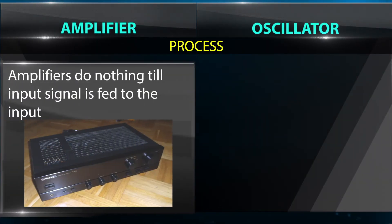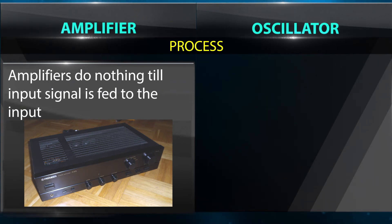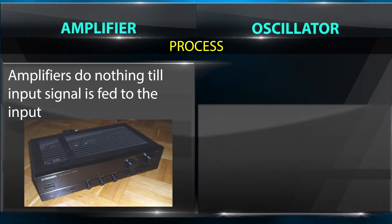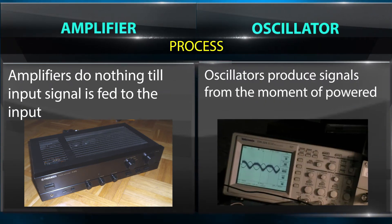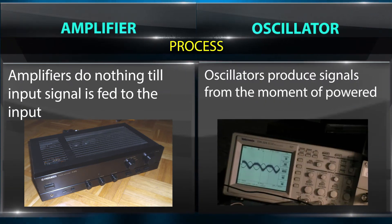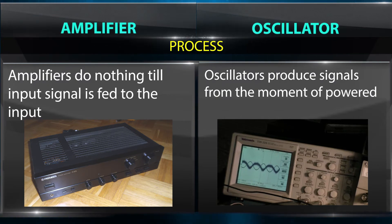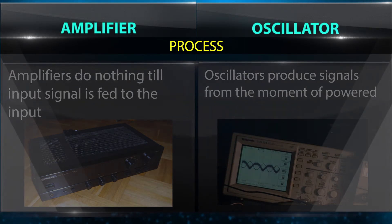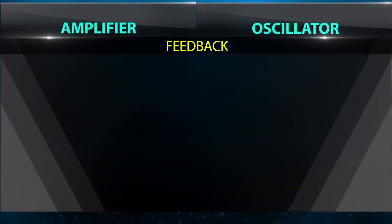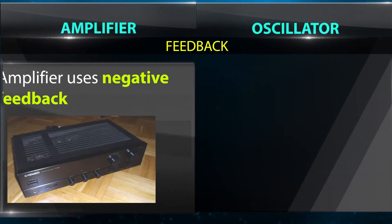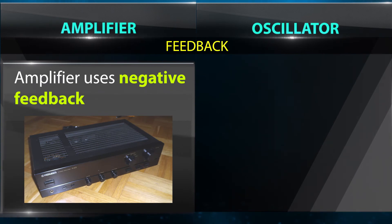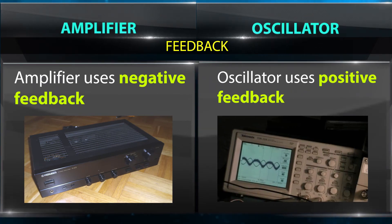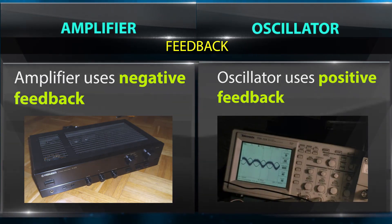Process: amplifiers do nothing until an input signal is fed to the input, whereas oscillators produce signals from the moment they are powered. Feedback: amplifiers use negative feedback, while oscillators use positive feedback.